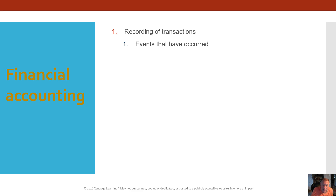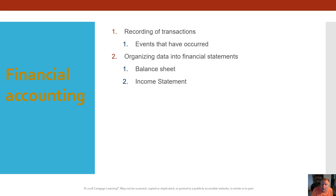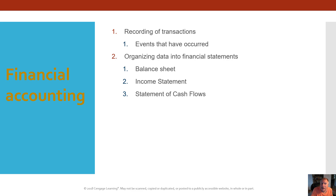The next step in financial accounting is organizing that data into financial statements: the balance sheet — what are the assets, liabilities, and equity of the company; the income statement — how did they do in the preceding period; the statement of cash flows — where did cash come from and where did it go; and to control assets, such as inventory, cash, receivables, and other aspects.